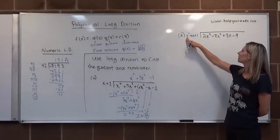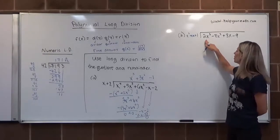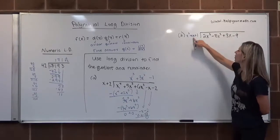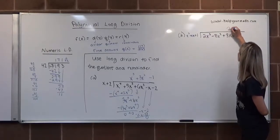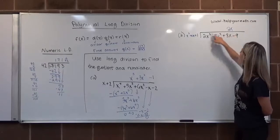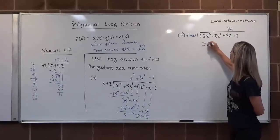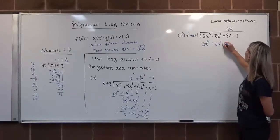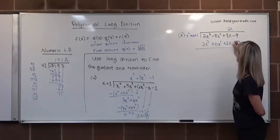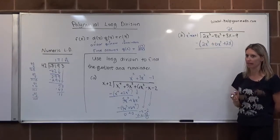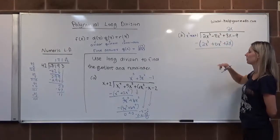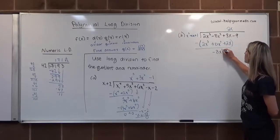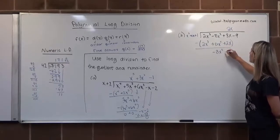First, we take the leading term: x² goes into 2x³ giving 2x times. Because there are three terms in the divisor, I go to the third position to place my 2x. I multiply 2x by all three terms to get 2x³+0x²+2x. This whole thing gets subtracted, so all signs change: 2x³ minus 2x³ is 0, -8x² minus 0x² stays -8x², and 3x minus 2x is x.